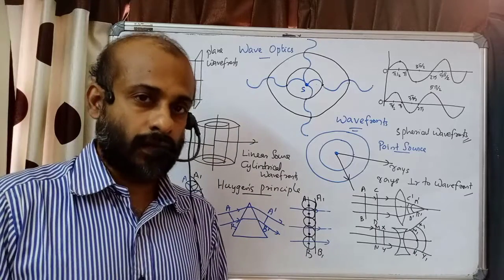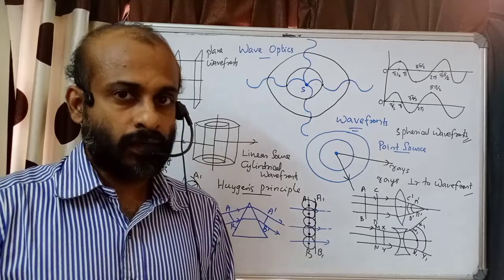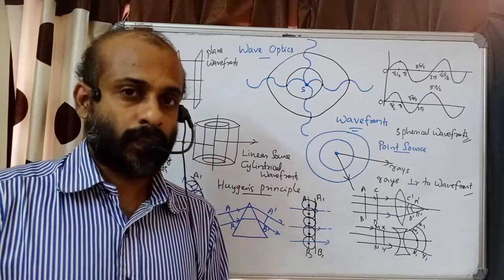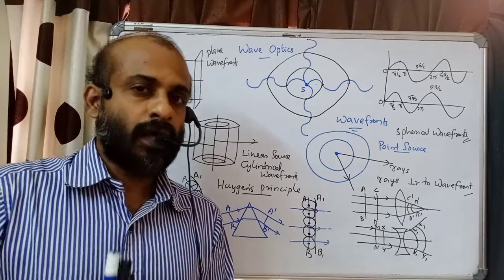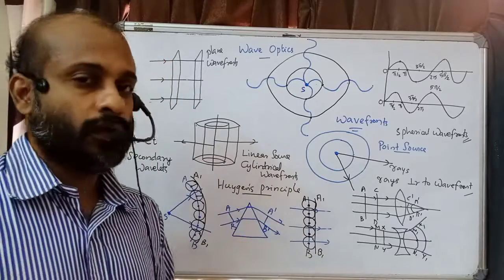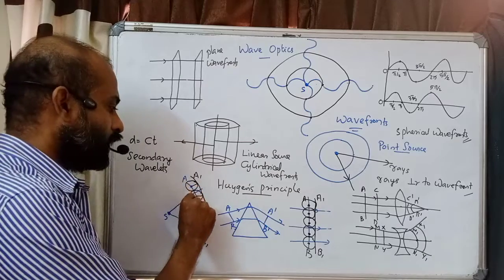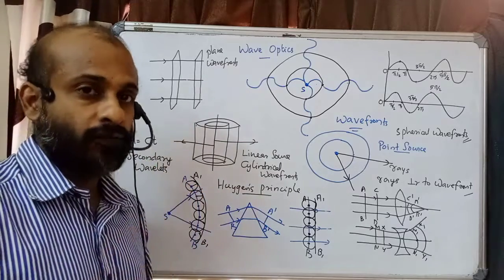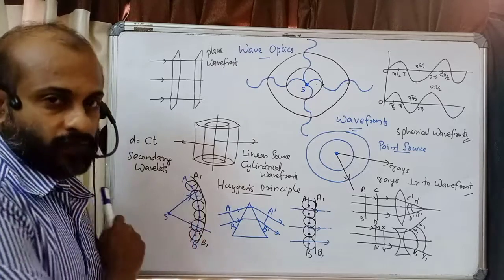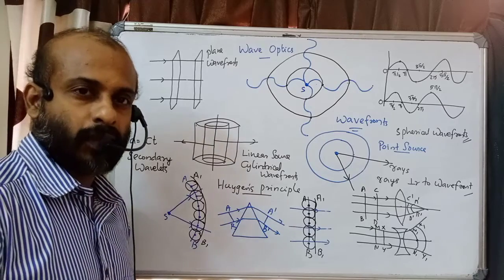That's about wavefronts and Huygens' principle. Remember, Huygens' principle is very important to draw the shapes of wavefronts at a particular time — if you know the wavefront at a particular time and want to draw it after a certain time interval, we use Huygens' principle. Each point on the wavefront acts as a source of secondary wavelets. These secondary wavelets are spherical, and their outer envelope gives us the new wavefront after that particular time.